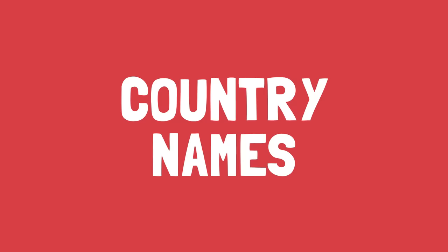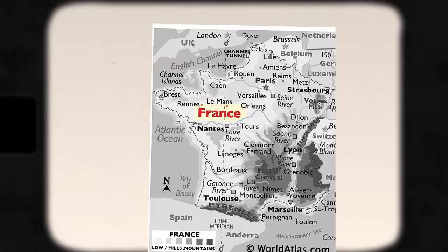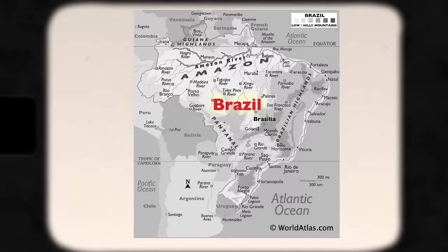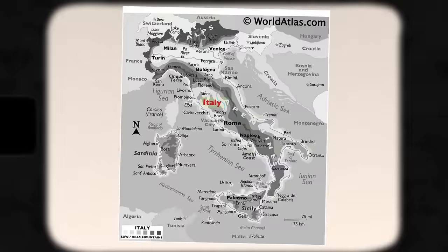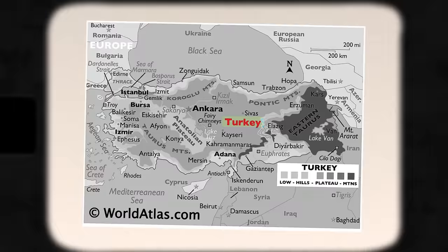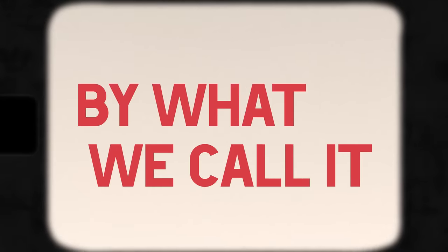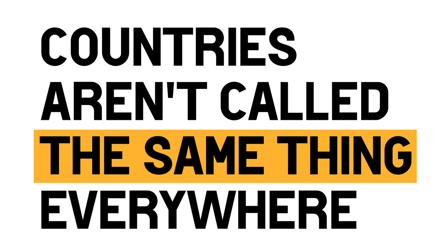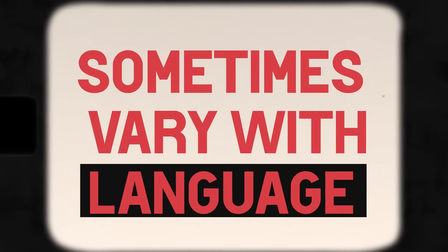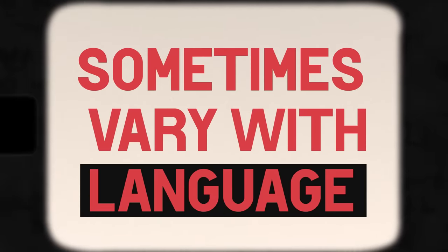Names. More specifically, country names. Every country is called something. Other than its flag or national anthem, it's the main way to identify a nation, by what we call it. But countries aren't called the same thing everywhere, and sometimes they vary with language.